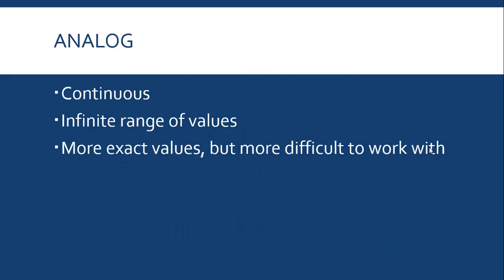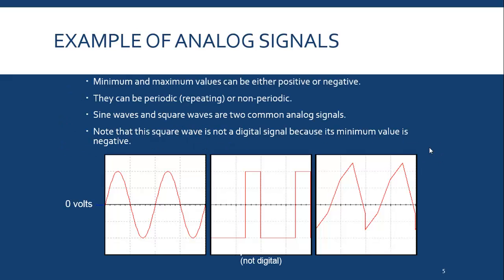Analog signals are continuous. They have an infinite range of values. Their values are much more exact, but they're much more difficult to work with. These would be some analog signals. You can see that they can be repeating or non-repeating. You see that a square wave can be an analog signal in the center, but it's not necessarily a digital signal.